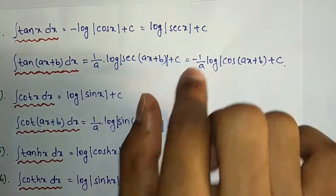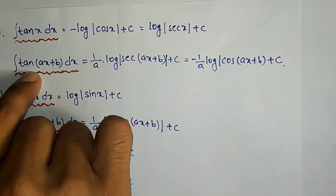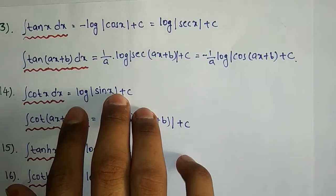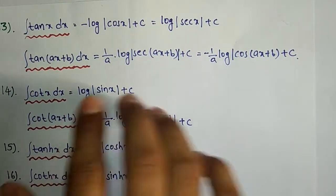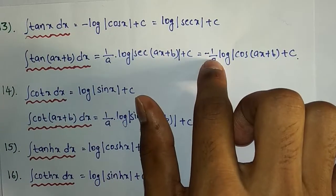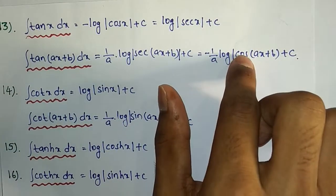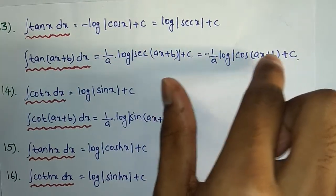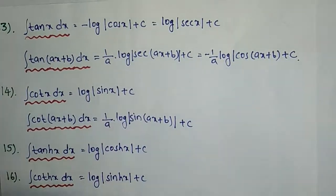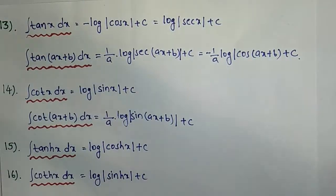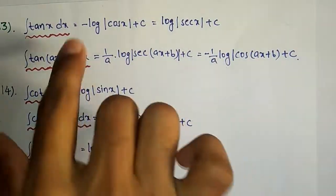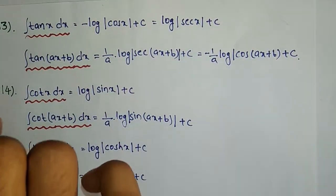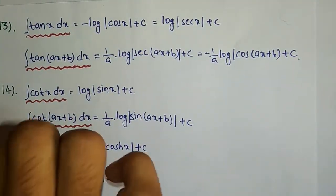Similarly, minus 1/a · log|cos(ax+b)| plus C is the same formula in another form, since secant and cosine are reciprocals.